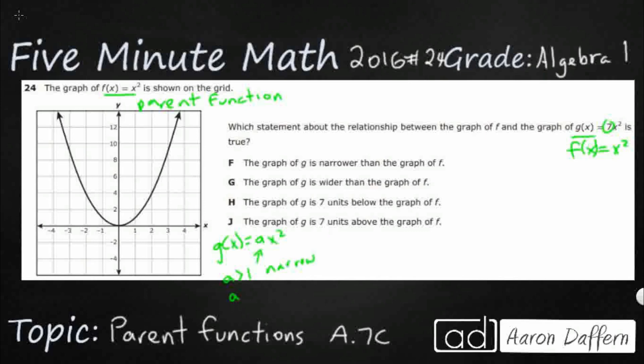If that a happens to be between 0 and 1, so it's a decimal, then it's going to get wider. And then if that a happens to be less than 0, so it's negative, then it's actually going to reflect across the x-axis. It's going to flip upside down and open downward rather than upward.